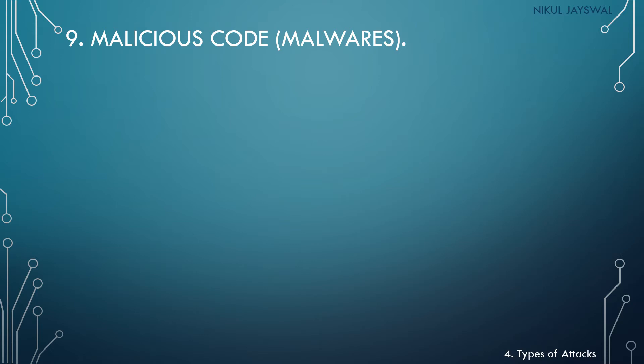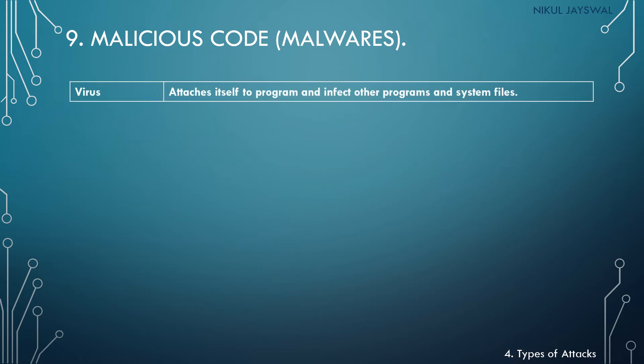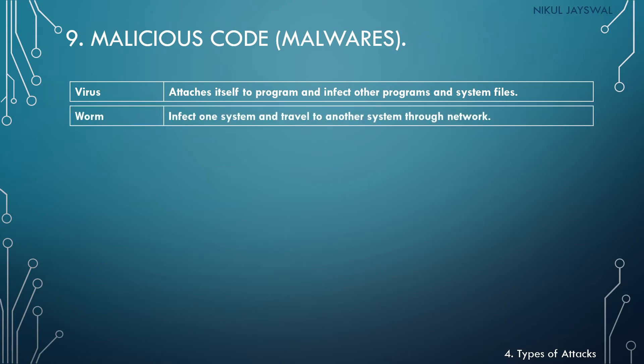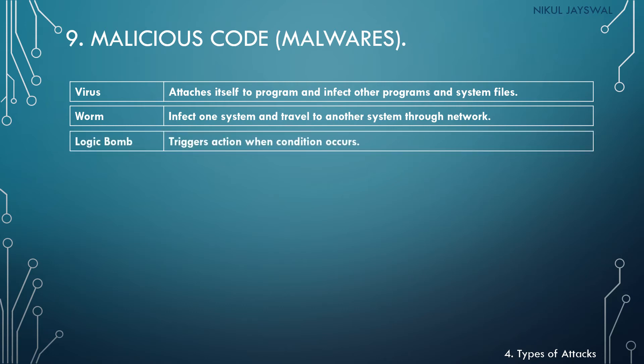The first category is virus. A virus attaches itself to a program and infects other programs and system files. Next is worm. A worm can travel from one machine to another through the network — it infects one system and travels to another through the network. Next is logic bomb — software that triggers actions when a condition occurs, damaging the system or information when that condition is met.